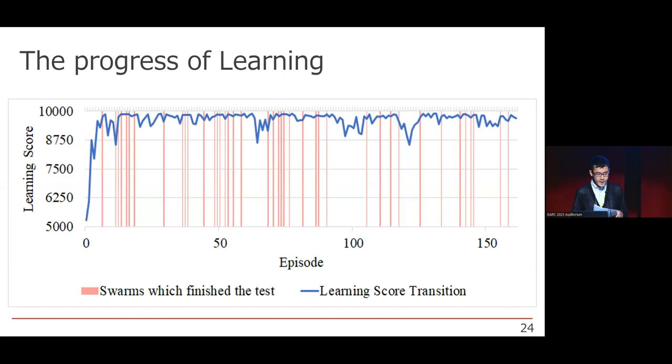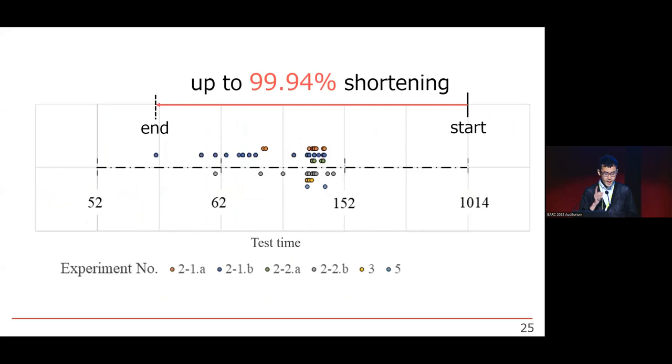This figure shows the progress of machine learning. As you can see, the more the machine solves the problem, the smarter machine becomes. In our study, we succeeded in up to 99.94% shortenings of the conducting time in the appropriate action choice model.